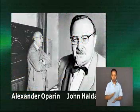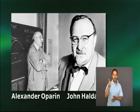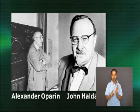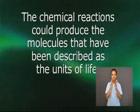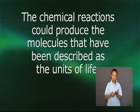In the 1920s, two scientists, Alexander Oparin and John Haldane, each stated that the essential molecules for life could have been made under the conditions of the early atmosphere. The scientists were able to simulate the conditions of the early atmosphere in an experiment. They conducted chemical reactions similar to ones that took place several billion years ago and observed what happened. The scientists stated that these chemical reactions could produce the molecules that have been described as the units of life.